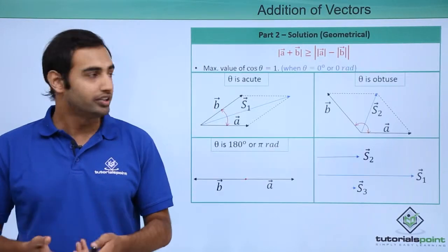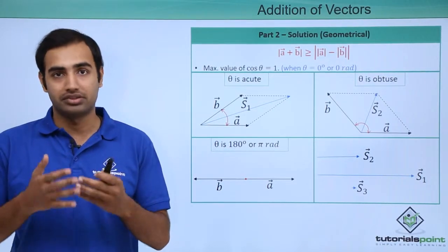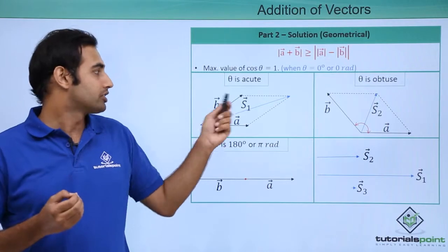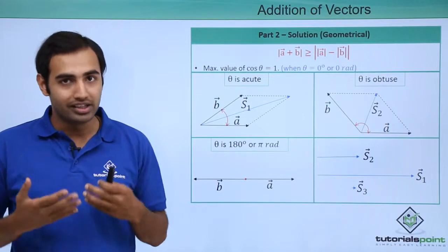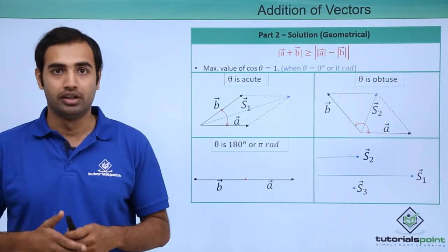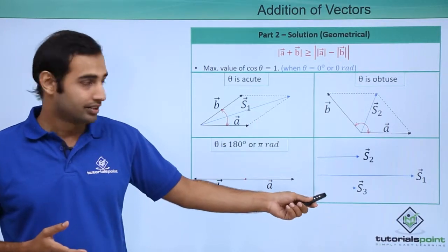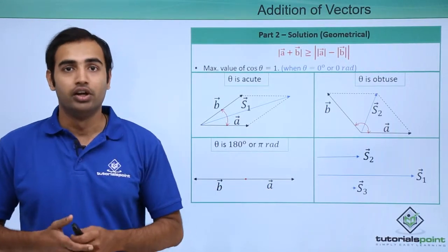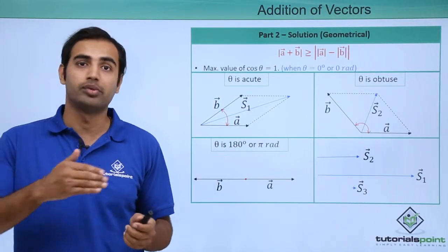Looking at this geometrically — the same two vectors A and B are added in multiple ways. With an acute angle between them, S1 is the resultant. With an obtuse angle, S2 is the resultant. With an angle of exactly 180 degrees, making the two vectors anti-parallel, the resultant S3 is very small. Comparing all three lengths, S3 is the smallest. This confirms that every other resultant when the angle differs from pi radians will be greater than S3.